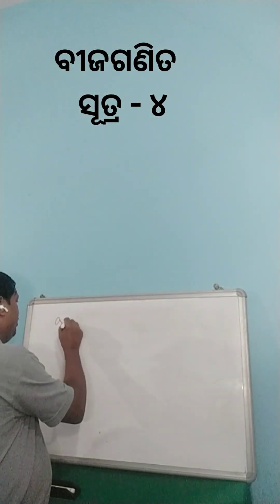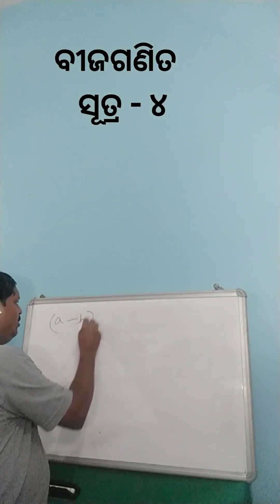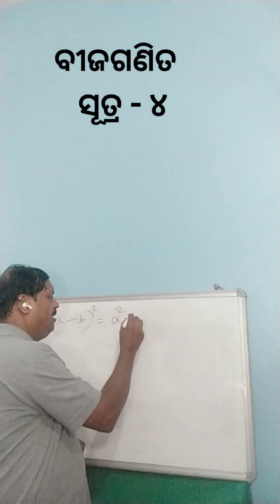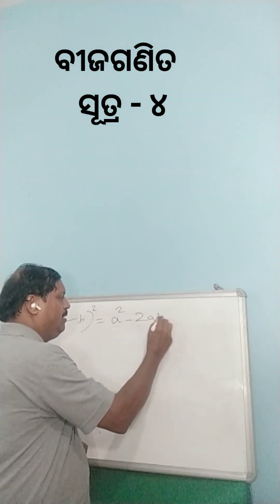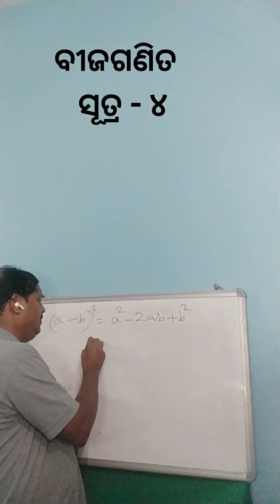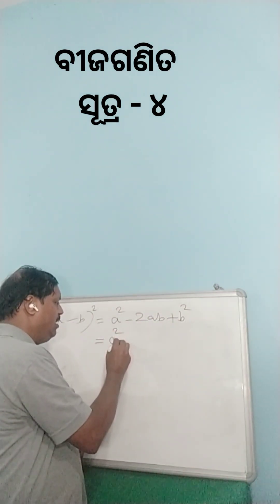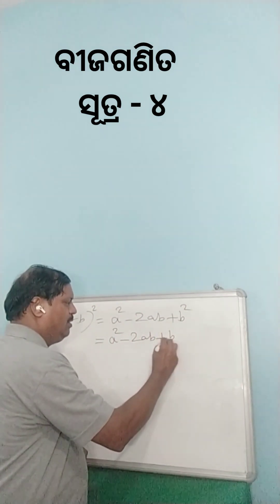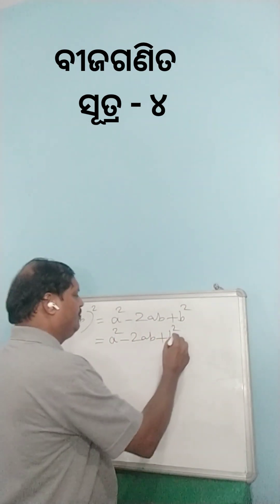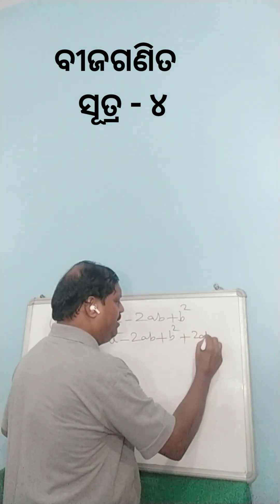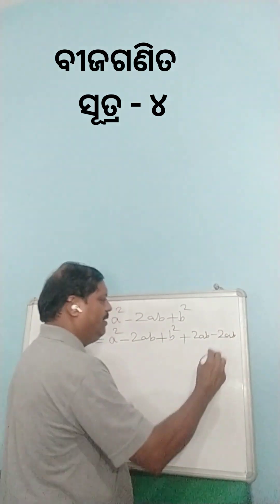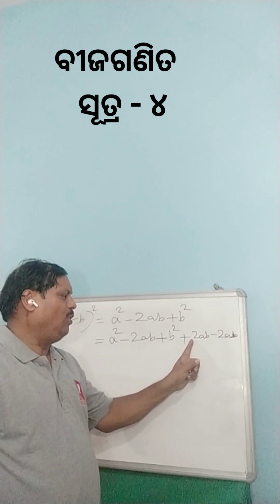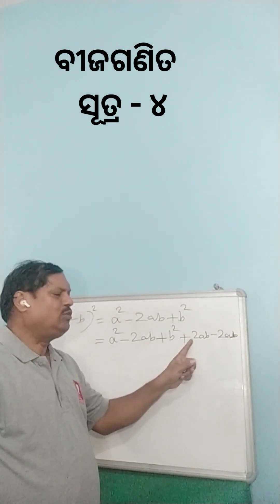A minus B whole square is equal to A square minus 2AB plus B square. This can also be written as A square minus 2AB plus B square plus 2AB minus 2AB, which simplifies with the extra terms canceling to zero.